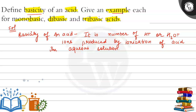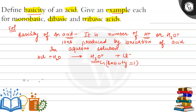For example, if we have HCl, when its ionization happens in aqueous solution, the products we get are H₃O⁺ and Cl⁻. Here we have one H₃O⁺ ion, so the basicity for HCl is one. This is what we call the basicity of an acid.